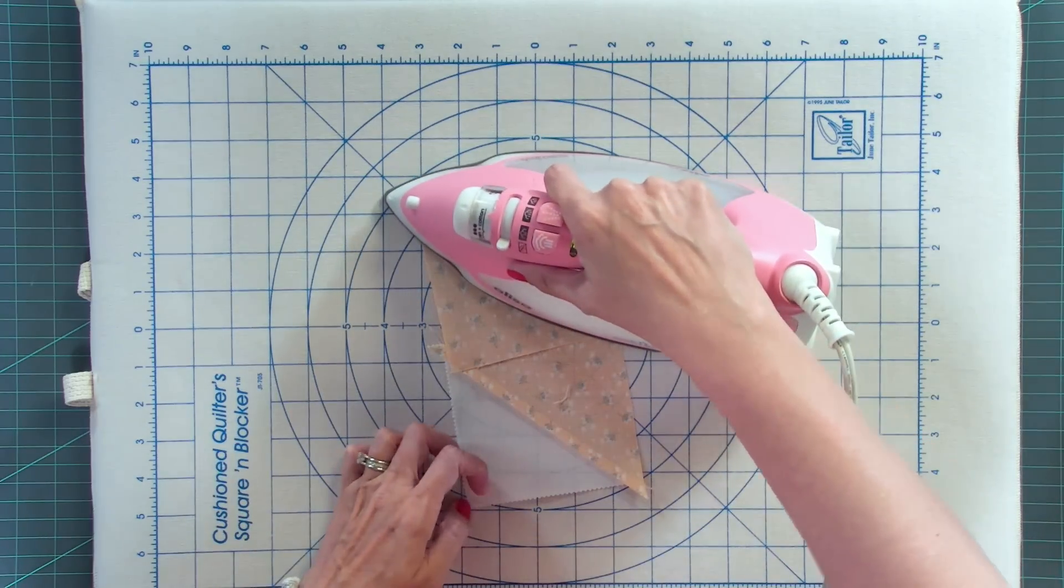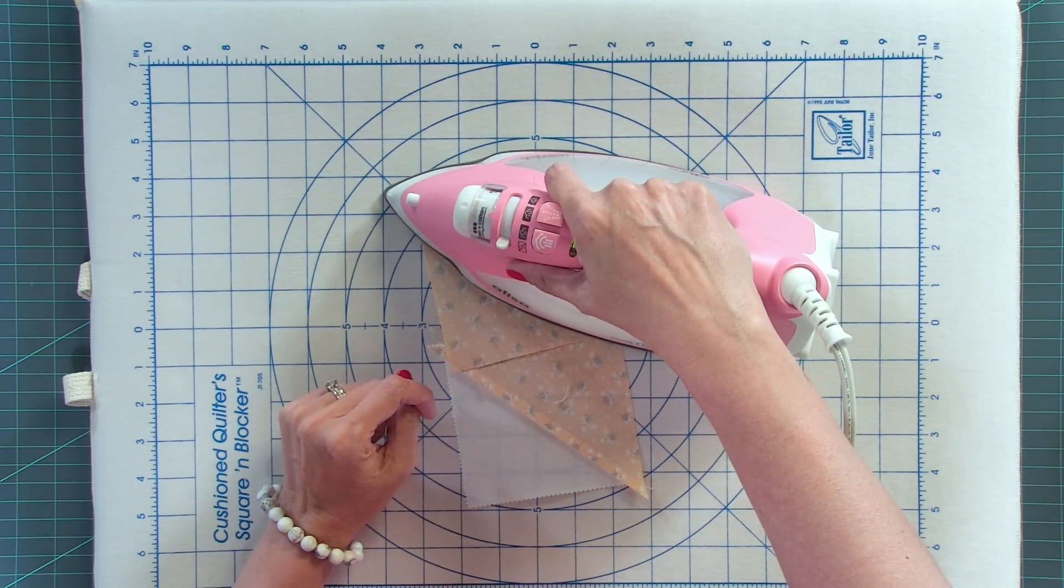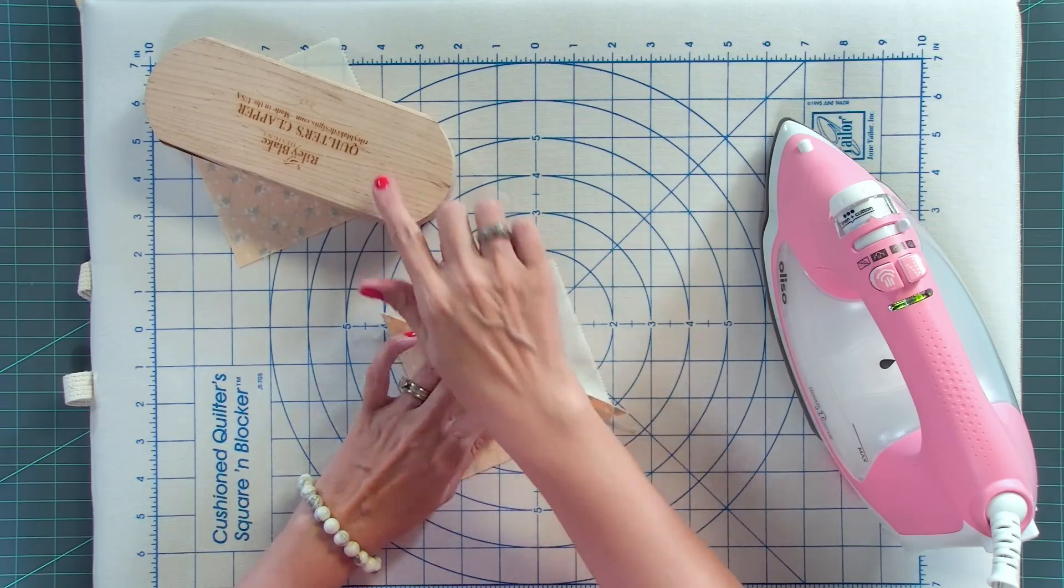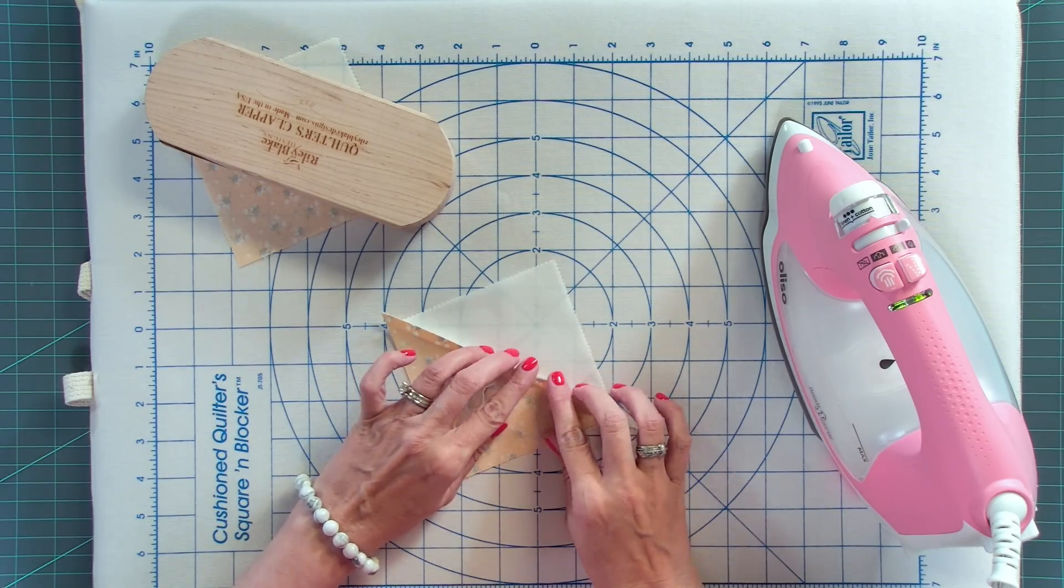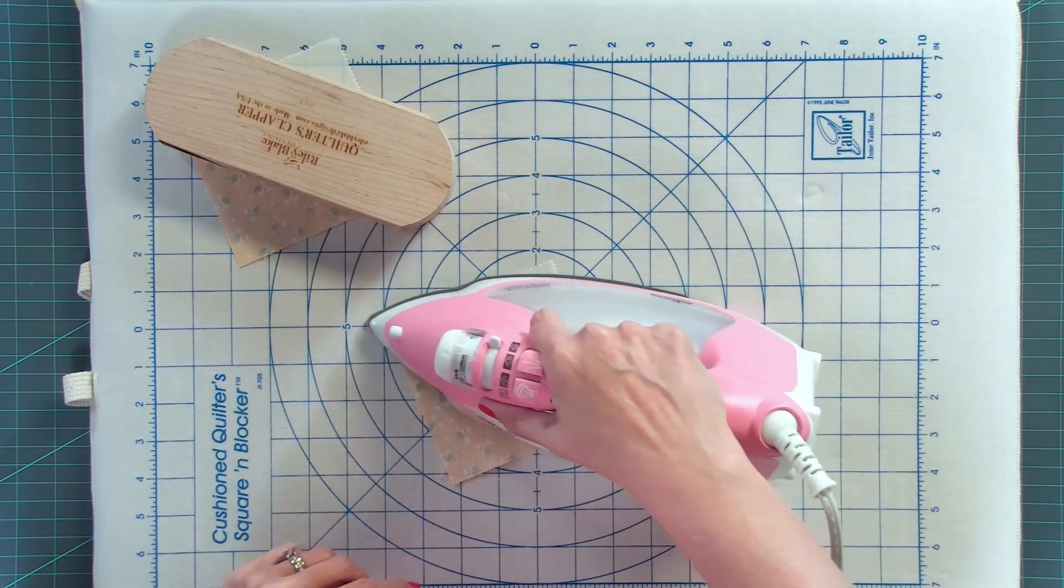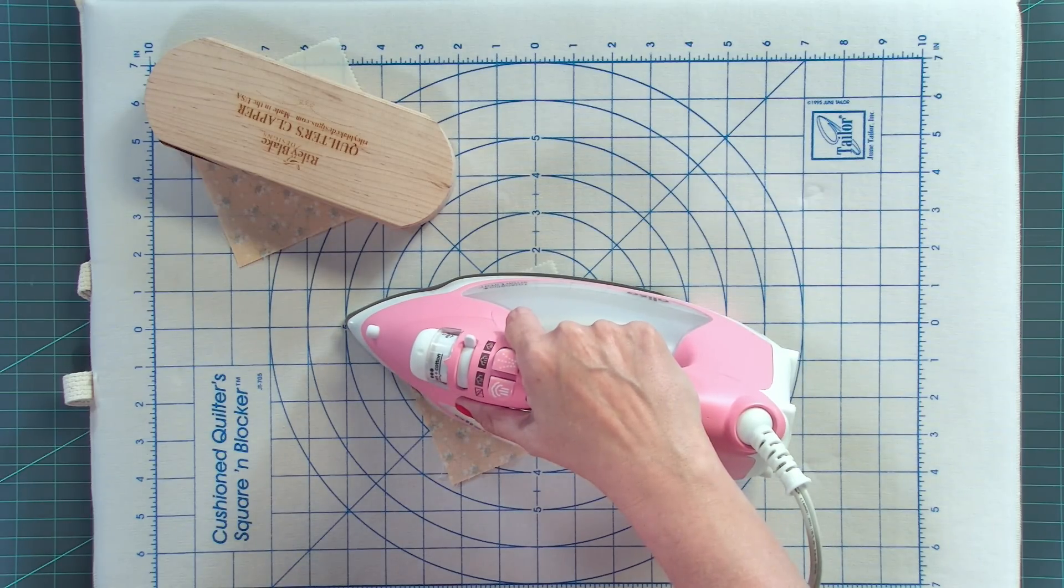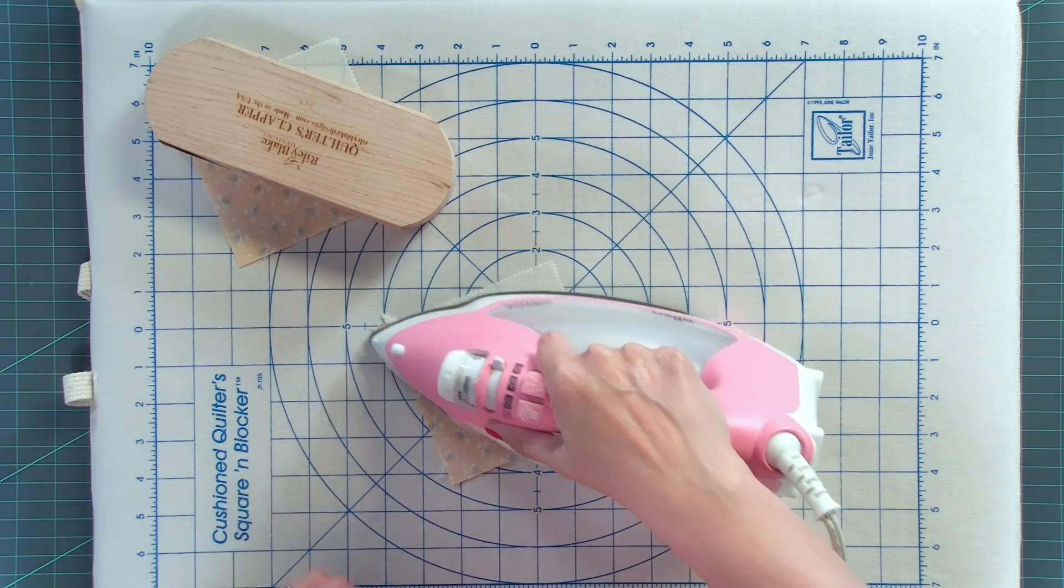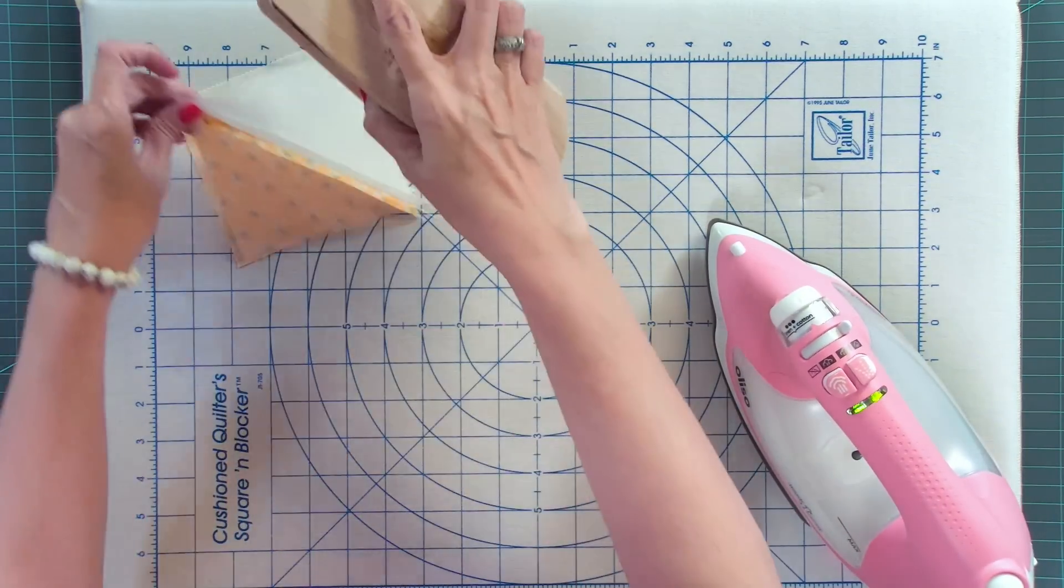Once you have pressed to one side, then go ahead and press open. And if you let the clapper sit on that for about 30 seconds, your block will get nice and flat. And having it nice and flat with no wrinkles is gonna give you the best results in the next steps.